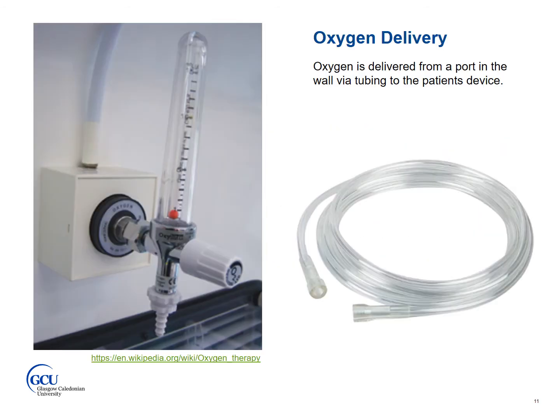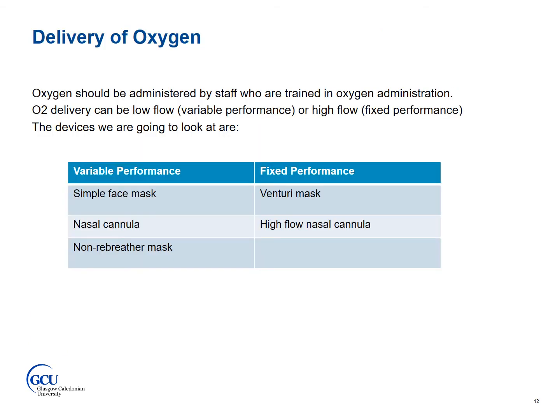Oxygen is delivered from an oxygen port in the wall or via a canister. It's delivered via oxygen tubing to the patient's device. The flow of oxygen is adjusted by turning the dial on the oxygen flow meter. Oxygen should be administered by staff who are trained in oxygen administration, using appropriate devices and flow rates in order to achieve the target saturations. Staff should be trained to use a range of different oxygen delivery devices to ensure oxygen is delivered safely.